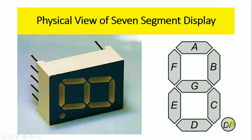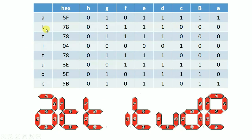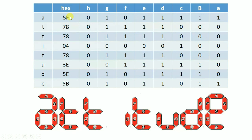To display character T, segments F, G, E, D are turned on and A, B, C are turned off. The hexadecimal equivalents for the word ATTITUDE are: A=5F, T=78, I=04, T=78, U=3E, D=5E, E=5B. Using these hex values in the program will display the word ATTITUDE on the seven segment displays.